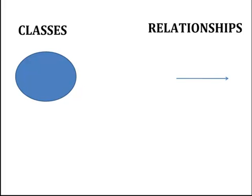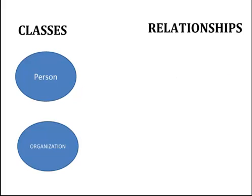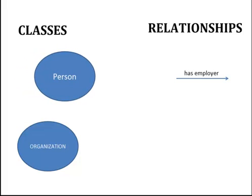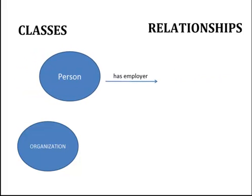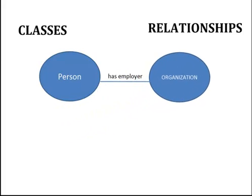Let's take a look at a particular example. In this example, there are two classes — Person and Organization — each representing a real-world concept. There is also a relationship called HasEmployer. Together, these classes and relationships can be combined to assert statements about the real world. The class Person is related to the class Organization through the property HasEmployer.